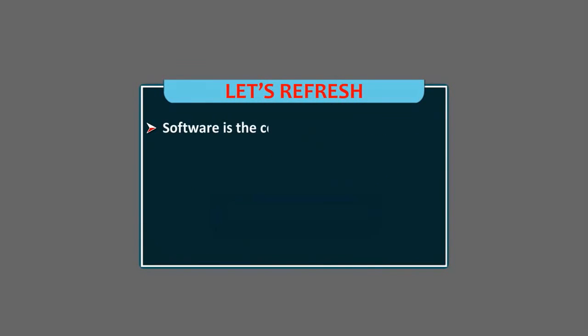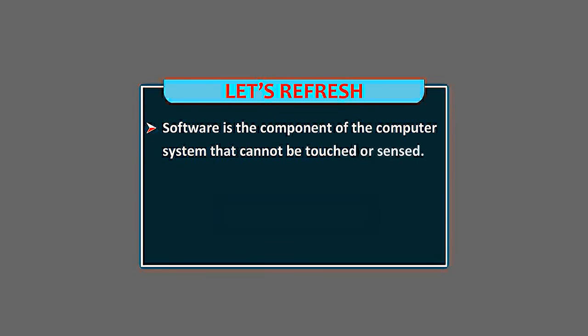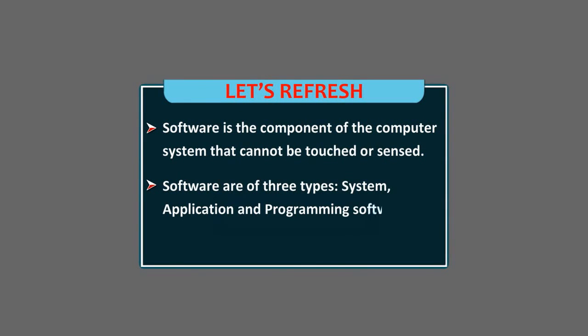Software is the component of the computer system that cannot be touched or sensed. Software are of three types: System, application and programming software.